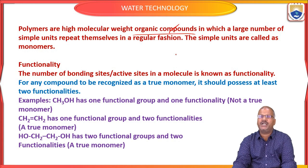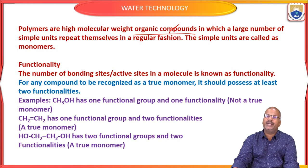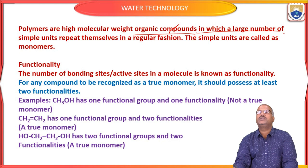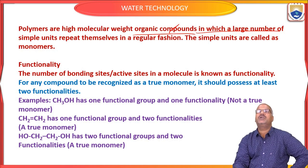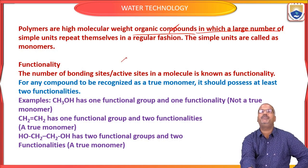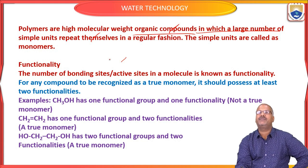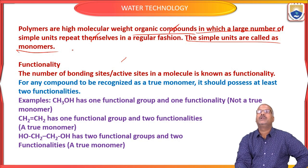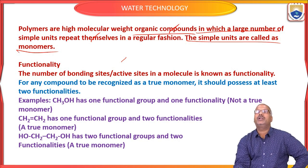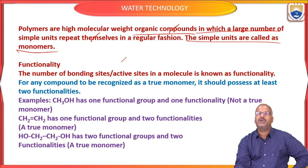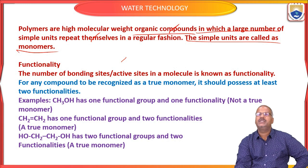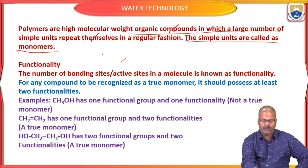The majority of polymers are organic in nature, but there are a few examples that are inorganic in nature as well. They are organic compounds in which a large number of simple units — called monomers — repeat themselves in a regular fashion.